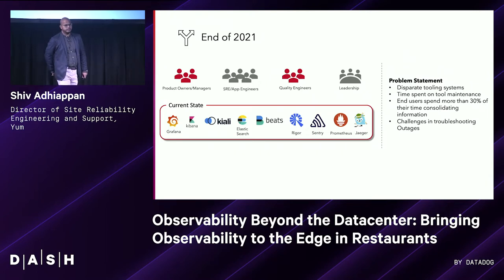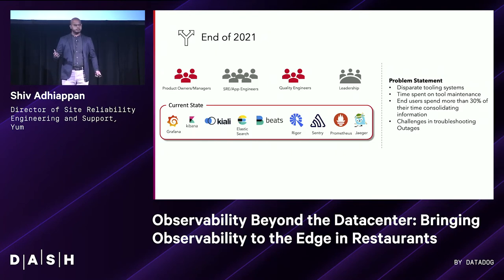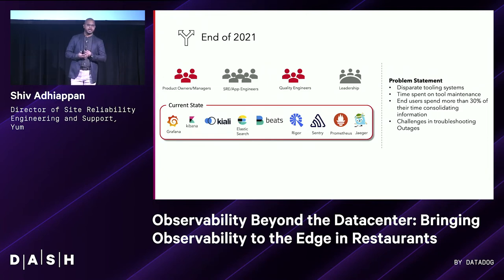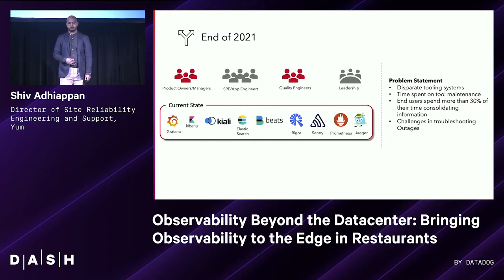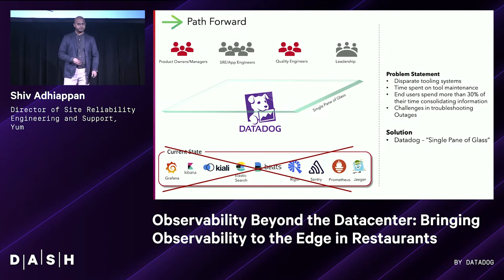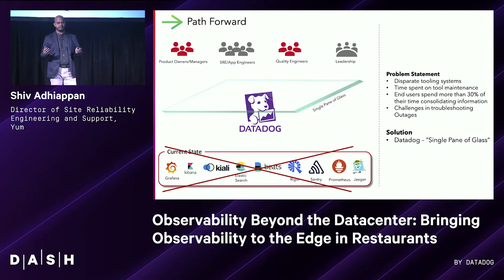Our team asked ourselves: what are we in this business for? Are we saving costs? Are we building tools? Are we maintaining? The only answer that came out of our internal discussion was that we want to build highly reliable, scalable platforms that enable our engineers to go faster and provide self-service. We want to spend our time on value-adding items, not low-value tool maintenance. So, obviously, a consolidated solution was the answer.